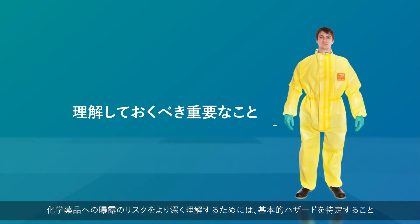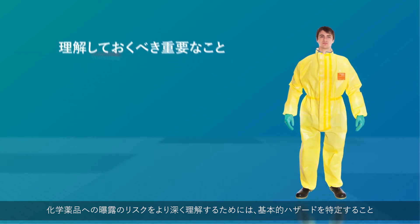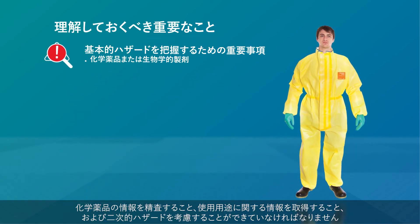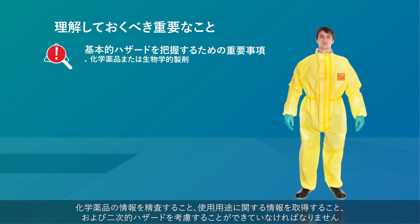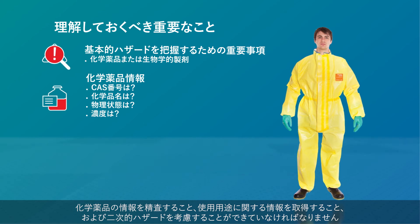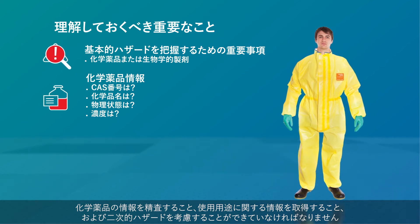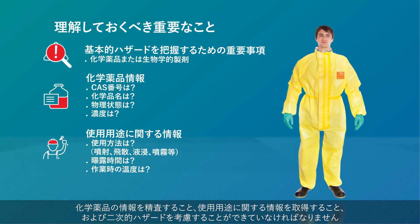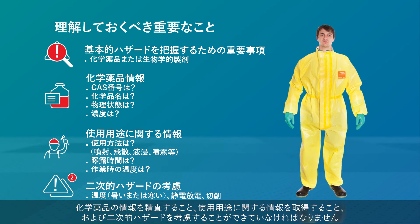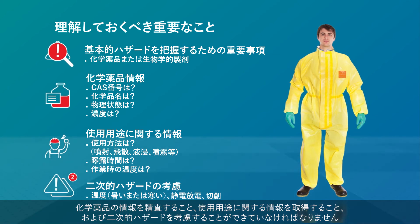To better understand the risks of chemical exposure, you must be able to identify primary hazards, examine chemical information, attain application information, and consider secondary hazards.